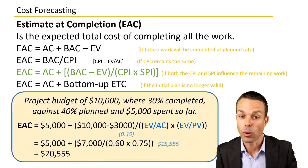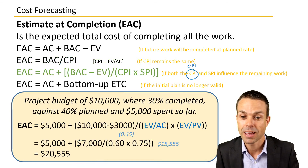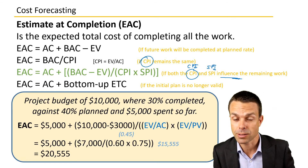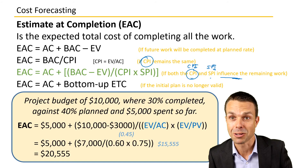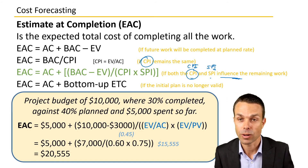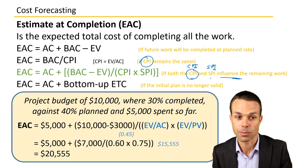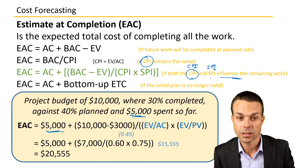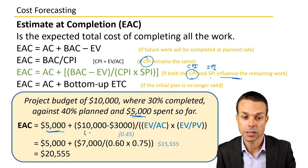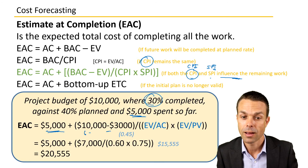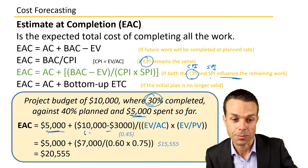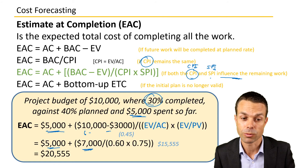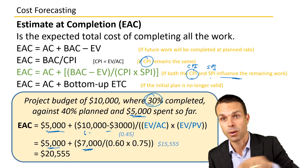The third formula is used when both the CPI (cost performance index) and the SPI (schedule performance index) influence the remaining work. The formula is: AC + (BAC − EV) / (CPI × SPI). We have actual cost of $5,000, BAC of $10,000, and earned value of $3,000 (30% of $10,000), giving us $5,000 plus $7,000 in the numerator — but that $7,000 is divided by CPI multiplied by SPI.